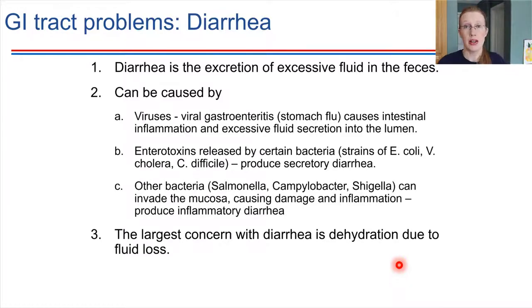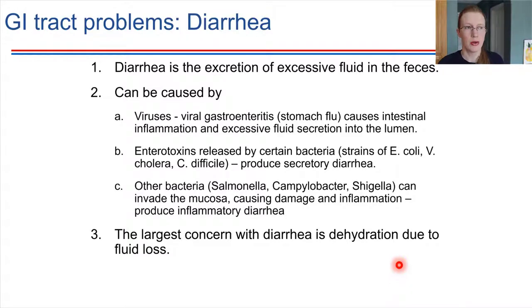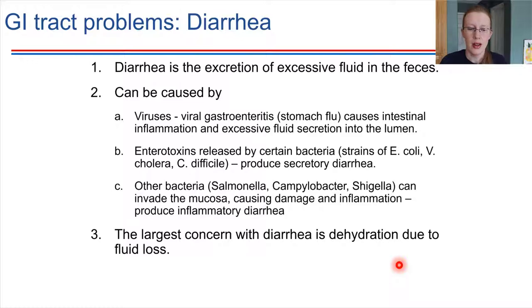There are other bacteria that actually make their way into the mucosa — into where our cells are — and that can trigger inflammation and an immune response, producing what would be called inflammatory diarrhea. So there are different mechanisms that can end up causing diarrhea, and the end result is not pleasant in any case.